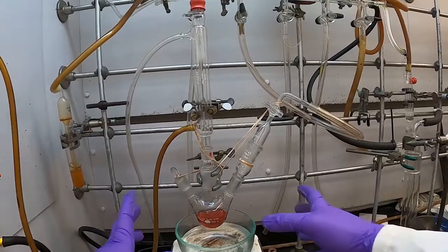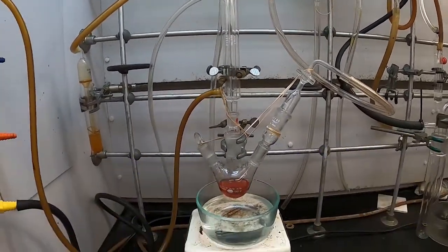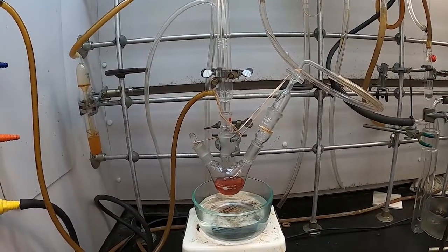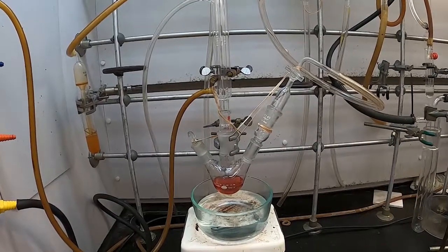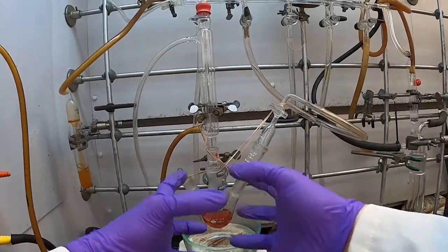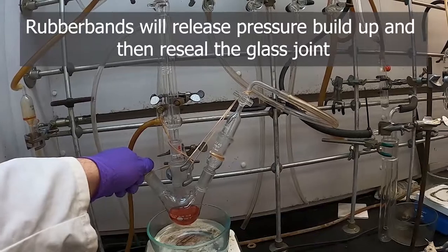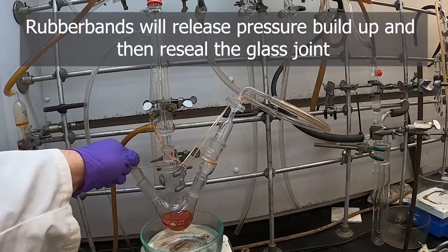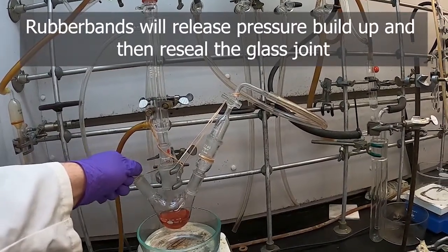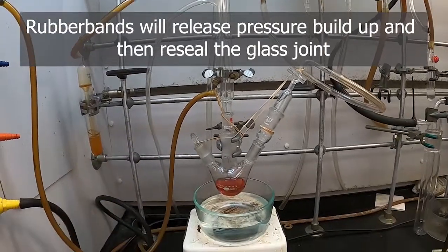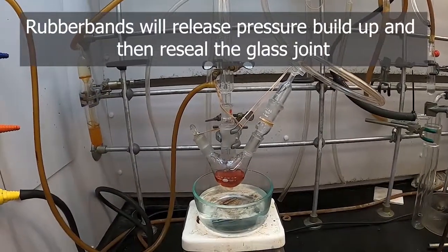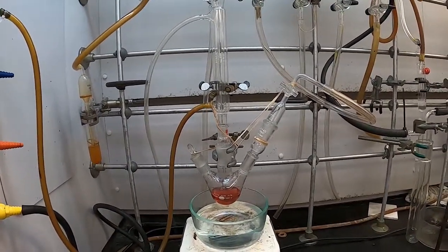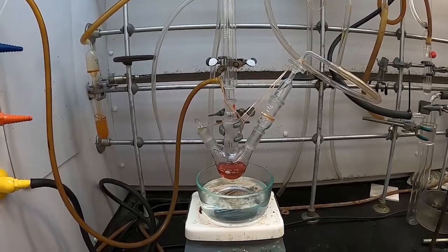The rubber bands are very important during the heating phase so that when as the reaction warms up, if pressure builds anywhere, the glass joint can pop and then return to the position so we don't have pieces of glass flying off and the reaction being exposed to atmosphere.